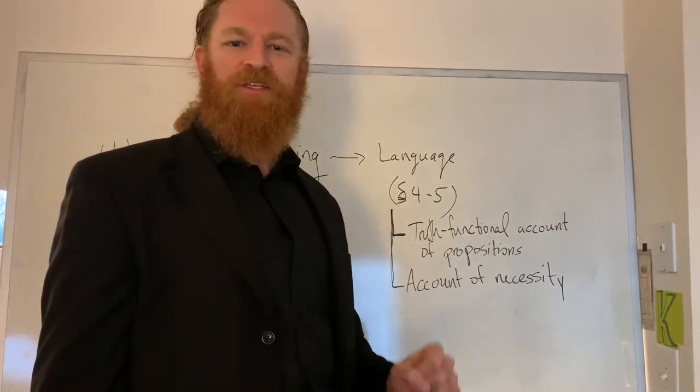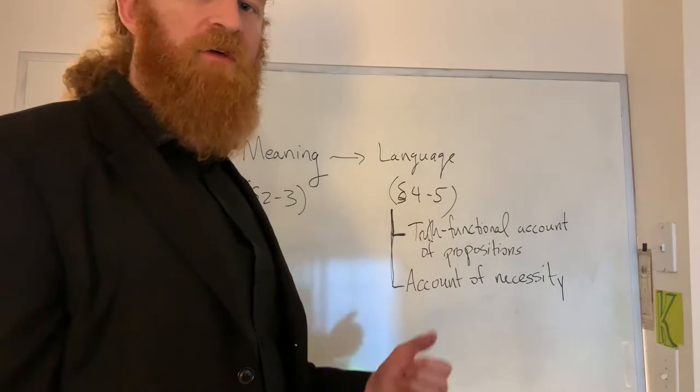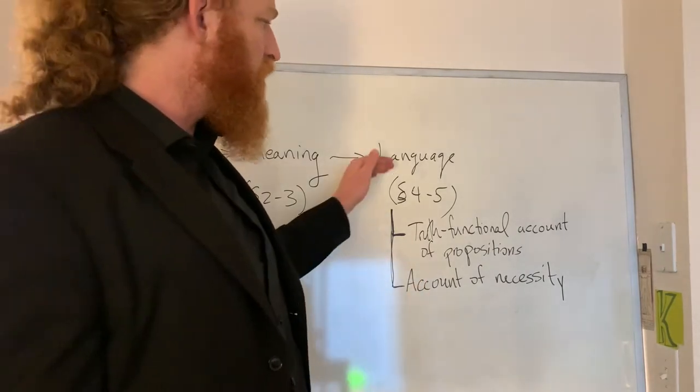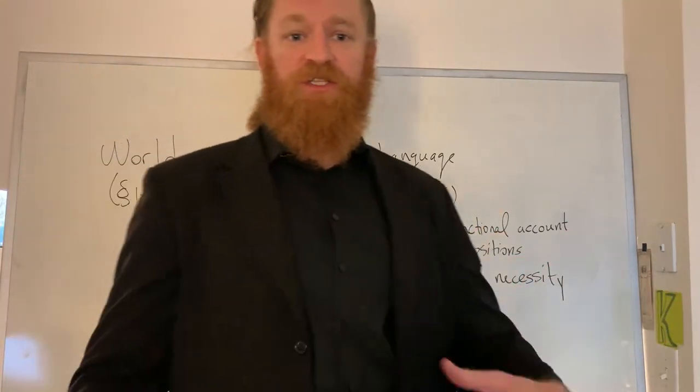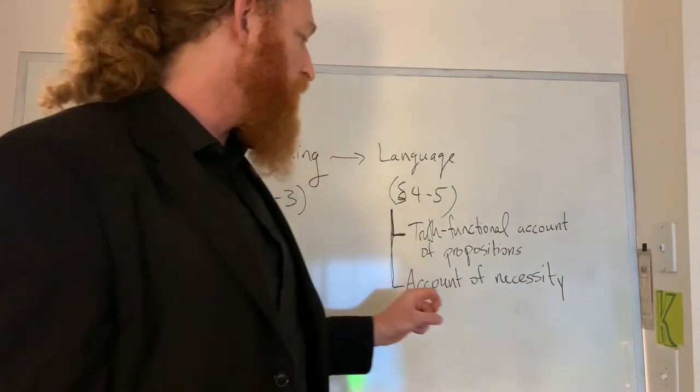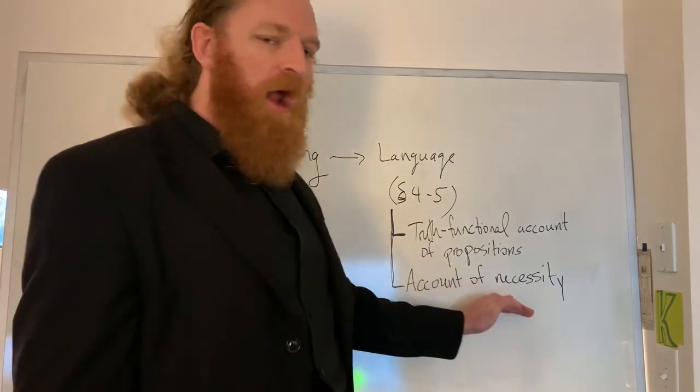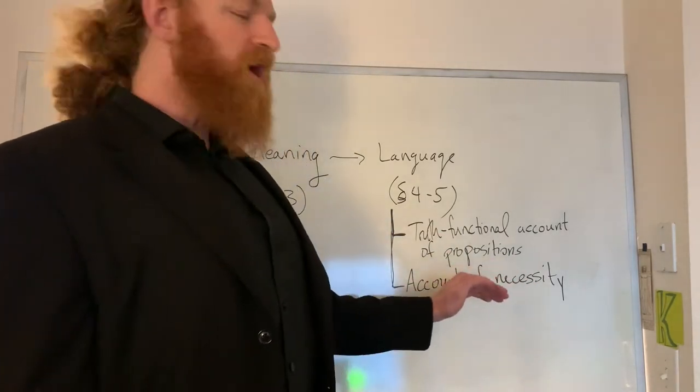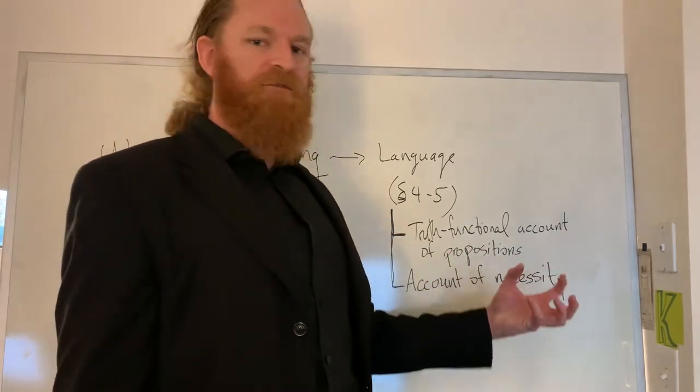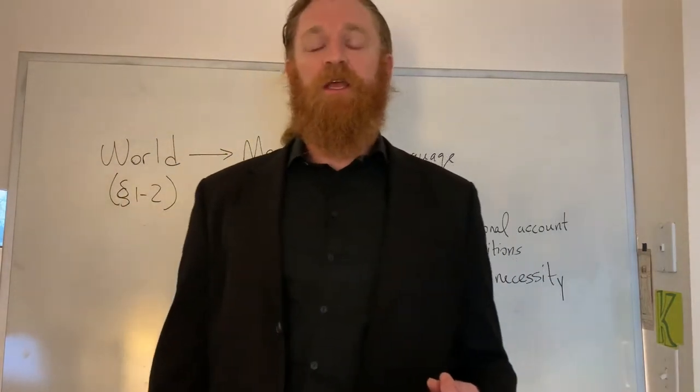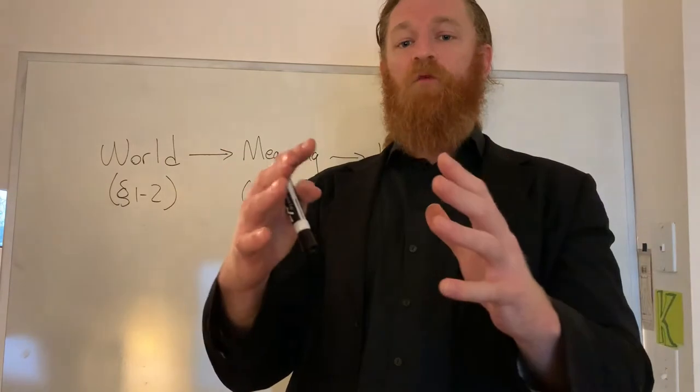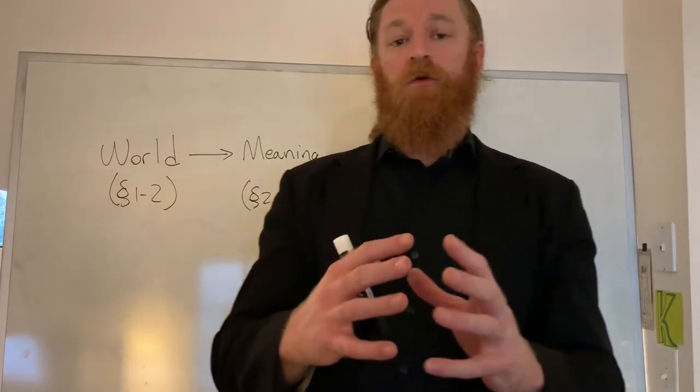And in particular, as we get into the weeds on propositions four and five, the important thing to look out for here is Wittgenstein's truth functional account of propositions. That is to say, a proposition is a truth function. We'll see what that means as we go. And perhaps most importantly, Wittgenstein's account of necessity that falls out of this. He's going to have a very distinctive account of necessity that narrows the range of what philosophy will be capable of doing.